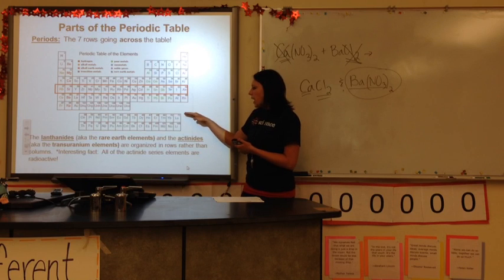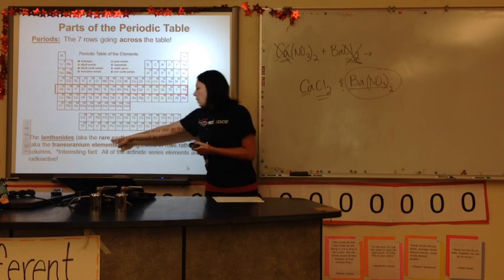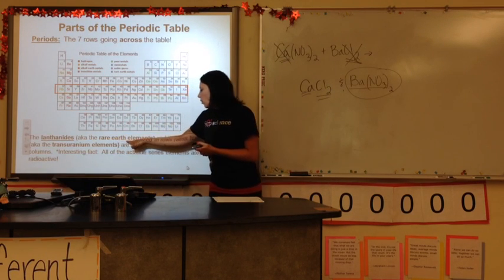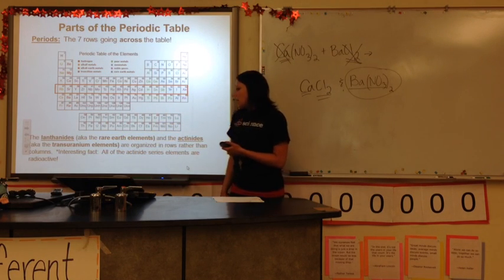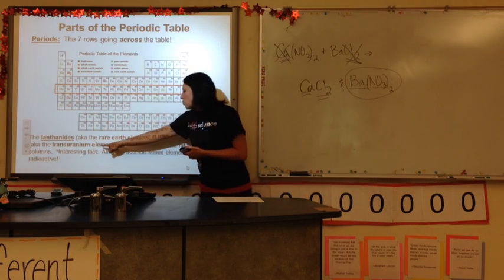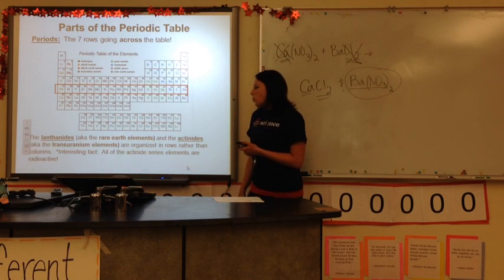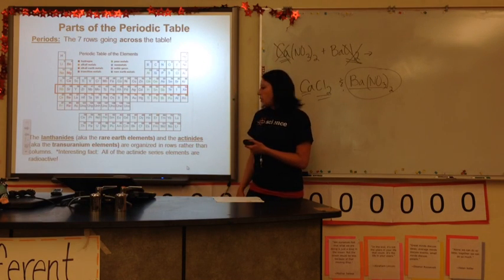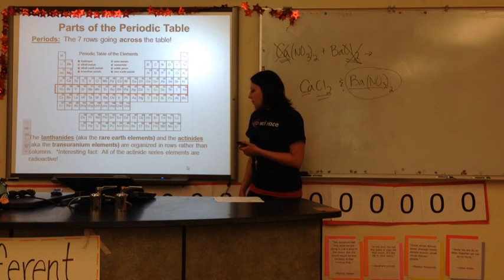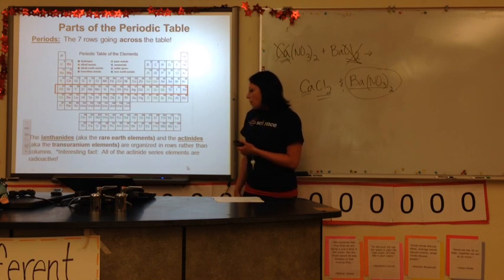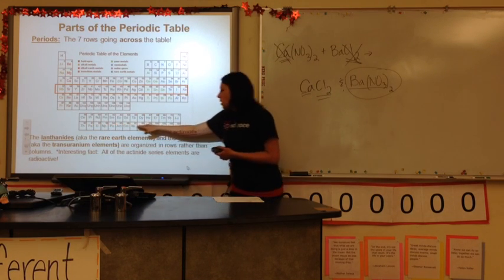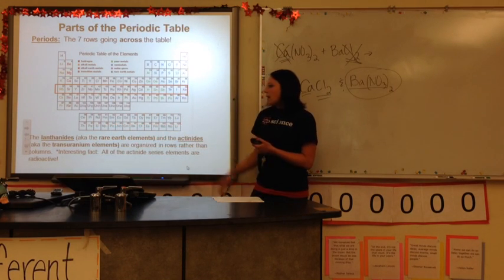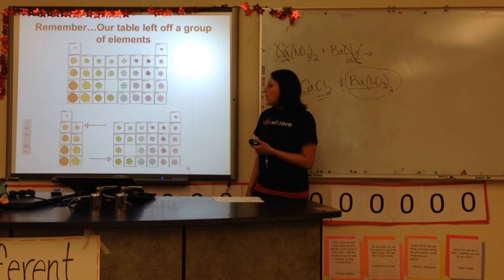They're named the lanthanides — the rare earth elements — and the actinides — the transuranium elements. A lot of them were made from uranium, bombarding it with another nuclei, because they're man-made. Everything in the actinides right here is radioactive, which we talk about a little bit later on.